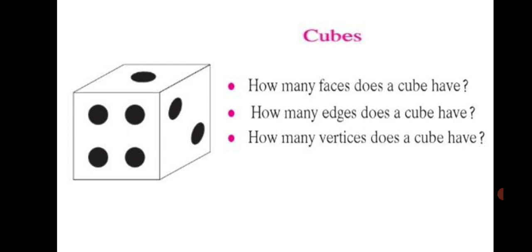Let's learn about cubes. There is a dice in the figure alongside. A cuboid is rectangular in shape whereas a dice is square. When all the faces of a quadrangular prism are equal squares, it is called a cube.